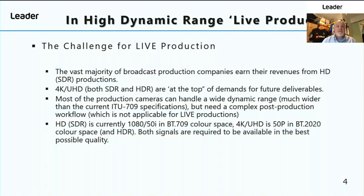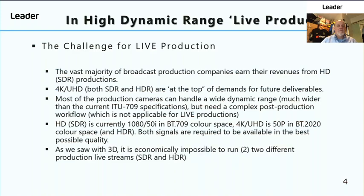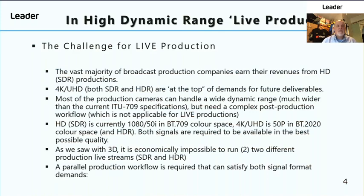HD-SDR is currently 1080-50i in BT-709 colour space. 4K UHD is 50p in BT-2020 colour space, and both high dynamic range and standard dynamic range signals are required to be available in the best possible quality. As we saw with 3D, it's economically impossible to run two different productions live, which is the challenge we're facing. So a parallel production workflow is required that can satisfy both signal format demands — 4K UHD in HDR and HD 1080i in standard dynamic range, or 1080p in HDR.